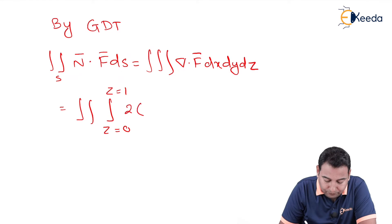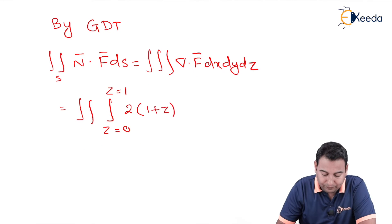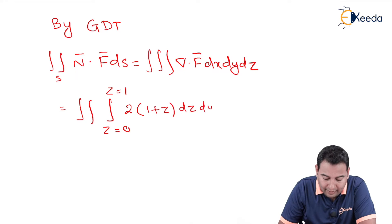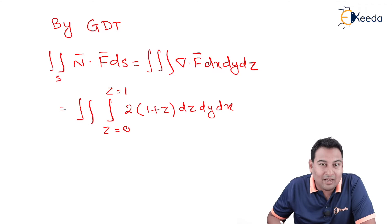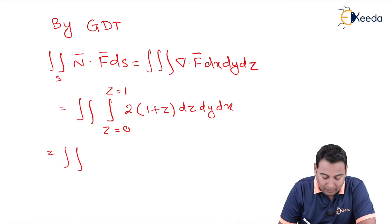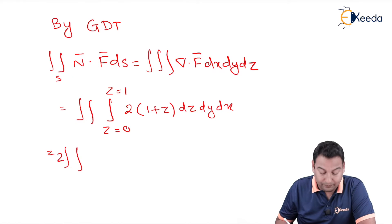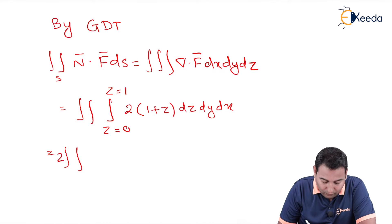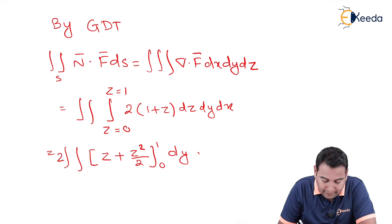Inside we do have 2(1 plus z) dz dy dx. Let's first evaluate with respect to z, which is equal to double integration of 2 you can take outside. That is common, constant basically. 1 plus z integration: 1 integration is z, z integration is z square by 2. And the limits are from 0 to 1. Then we have dy and dx.